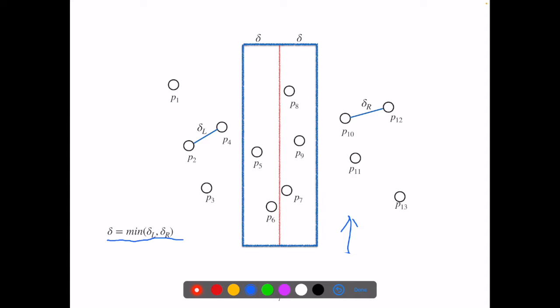Recall that we sorted all the points on both their x-coordinate and y-coordinate. So we go from the lowest point, p6, and compute its distance to the points in this blue rectangle above it that might possibly be less than delta away.